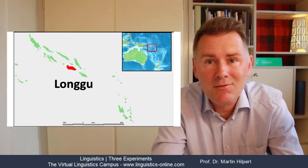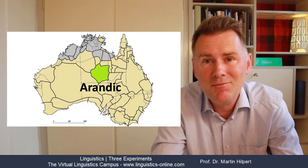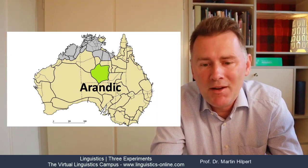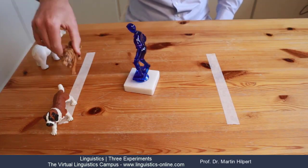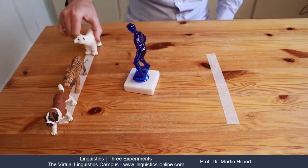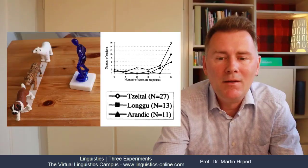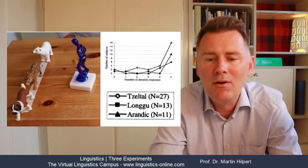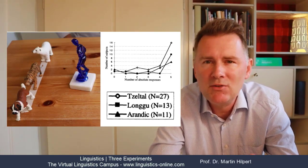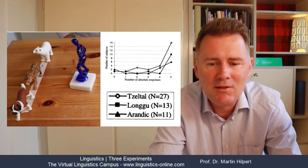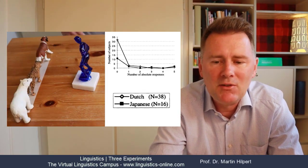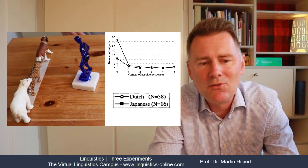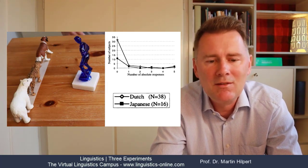Well, speakers of the languages Zeltal, Longu and Orandic do it differently. When they are asked to put the animals in a row they have the dog on the left followed by the tiger and by the polar bear. Here we see a graph with the results. Speakers of Zeltal, Longu and Orandic overwhelmingly arrange the animals in the way you see here, whereas speakers of Dutch and Japanese tend to arrange them like this.